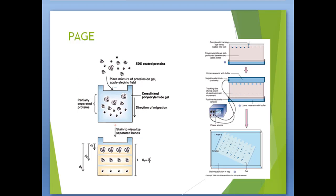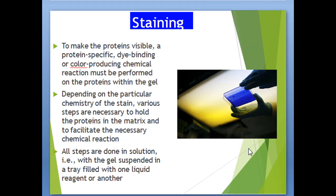This picture shows the separation of proteins in a vertical electrophoresis apparatus. After electrophoresis, proteins exist as concentrated bands embedded within each lane of the porous polyacrylamide gel matrix. Typically, the proteins are still bound to the anionic SDS detergent, and the entire gel matrix is saturated in a particular buffer. Once electrophoresis is complete, the gel is stained.